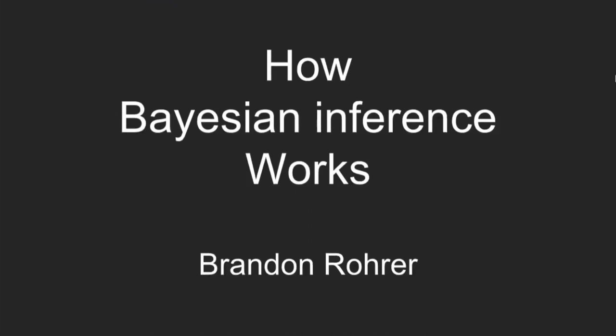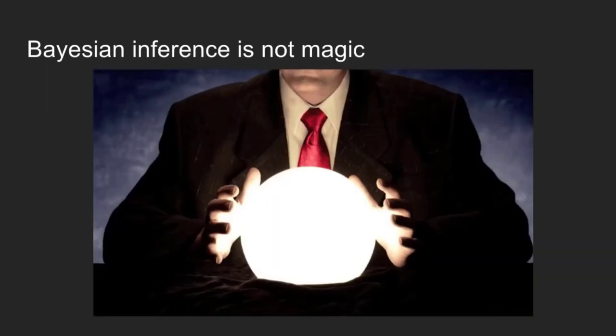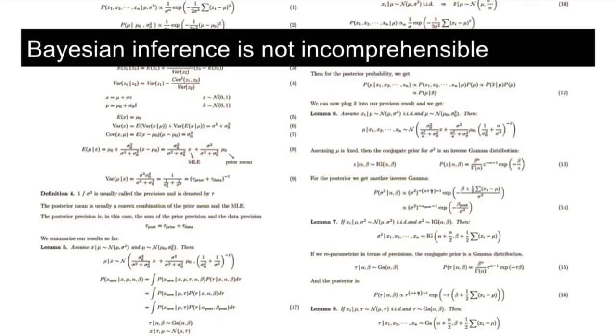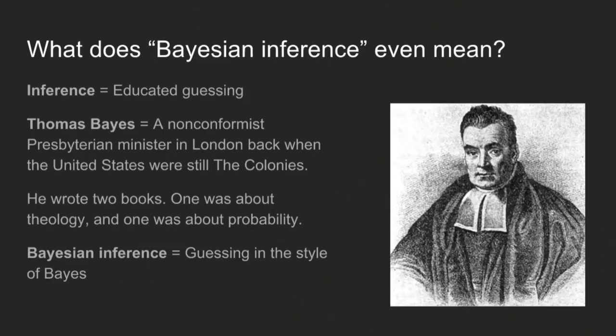Bayesian inference is a way to make guesses about what your data mean based on sometimes very little data. The way it works is tricky but not magic — it's definitely something you can wrap your head around. My goal is that by the time we're done talking, you'll have a pretty crisp picture of how it works. Bayesian inference is just guessing in the style of Thomas Bayes, who was a nonconformist Presbyterian minister. He wrote a couple of books — one about religion and one about probability.